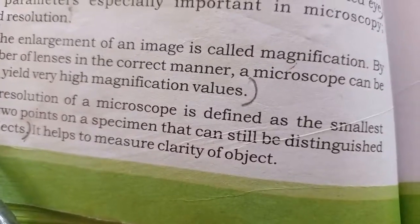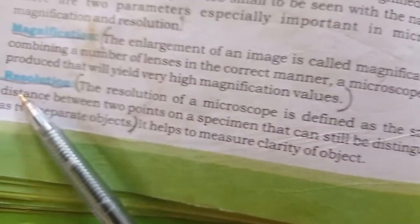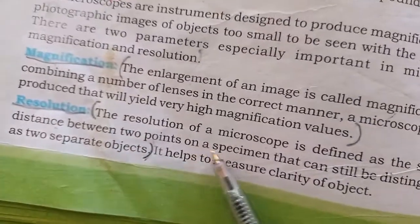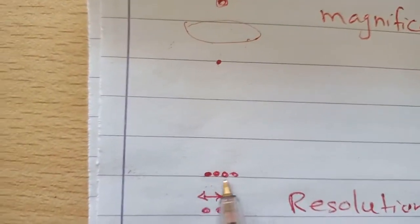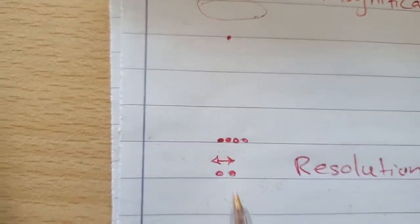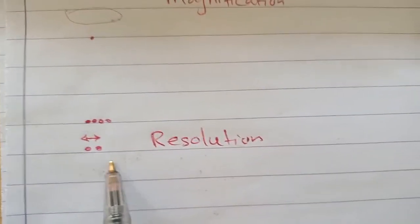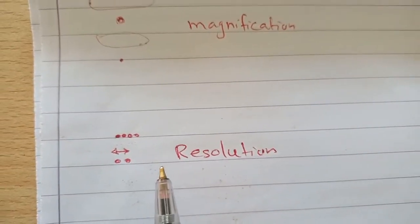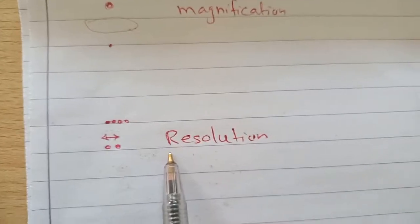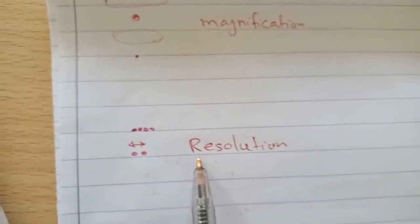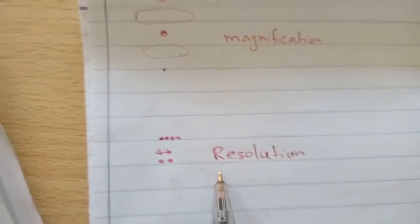What is the meaning of resolution? The resolution of a microscope is defined as the smallest distance between two points on a specimen. For example, like a picture on your mobile phone when you enlarge it — it becomes more prominent. But if you increase the resolution beyond a certain point, you get pixel error and the image becomes blurred.